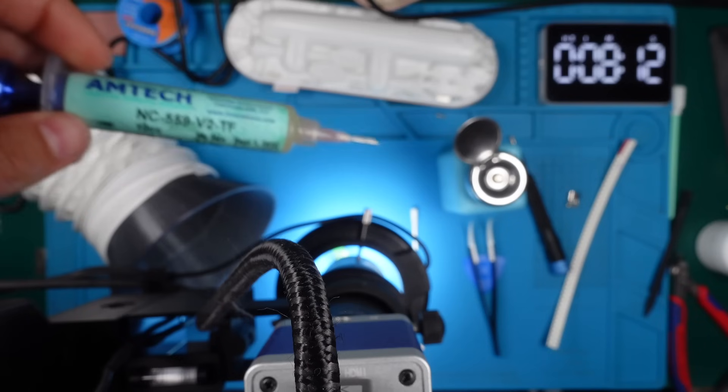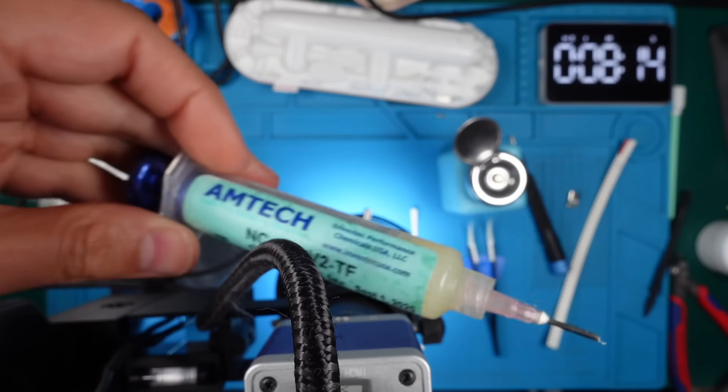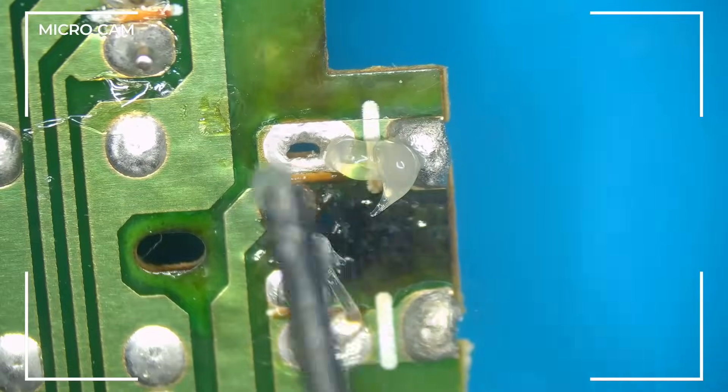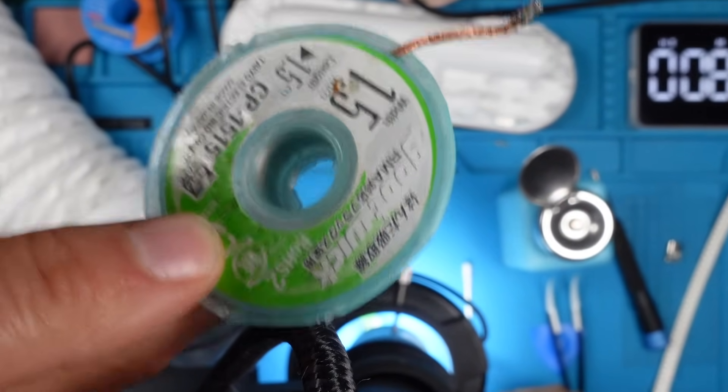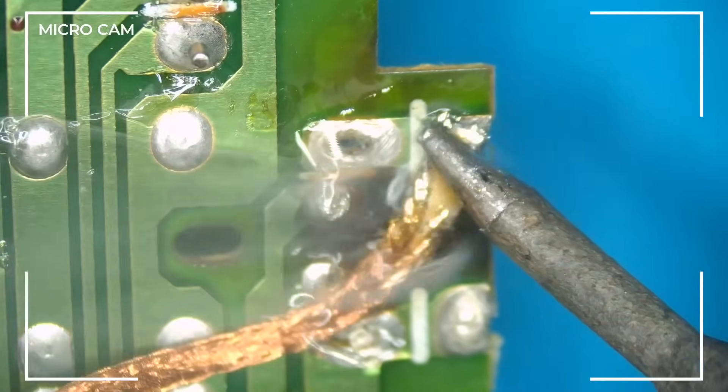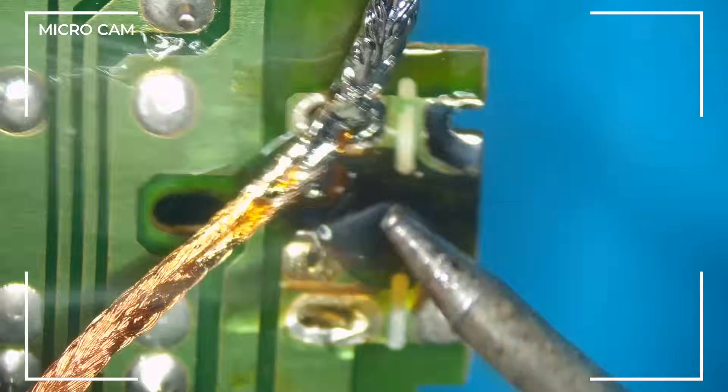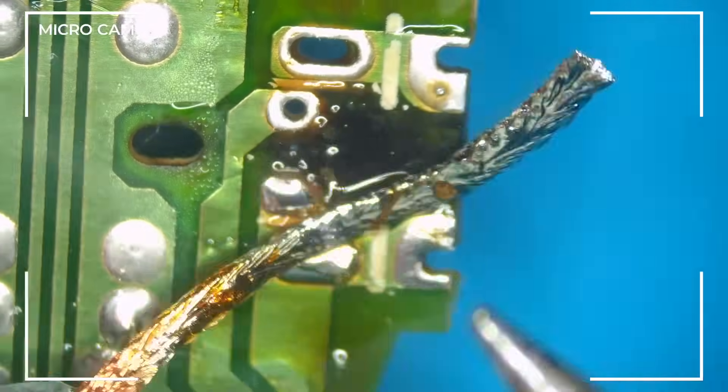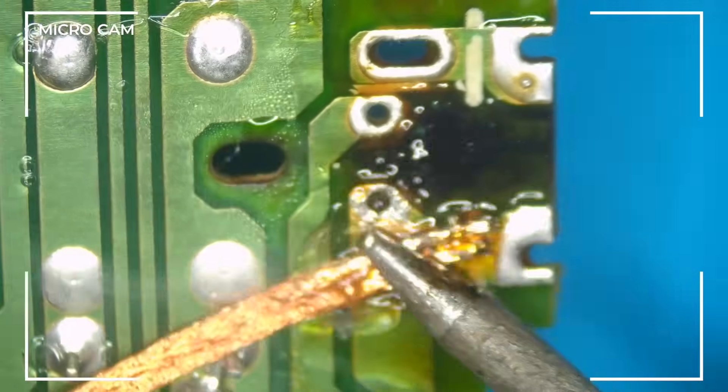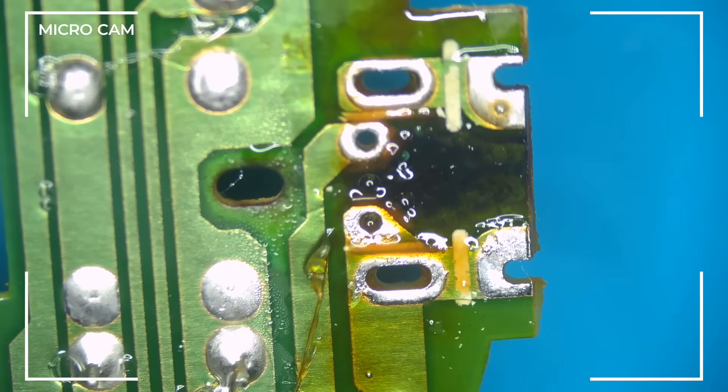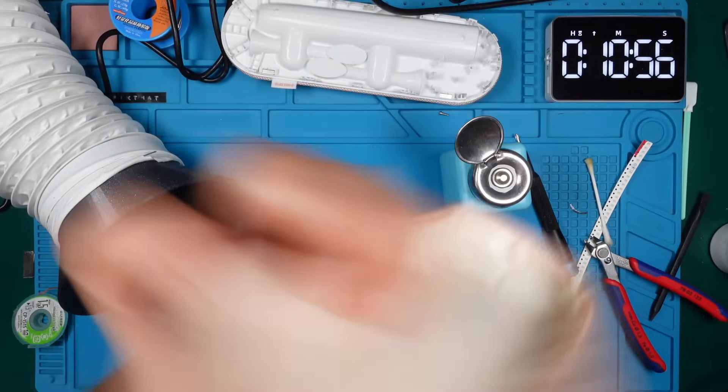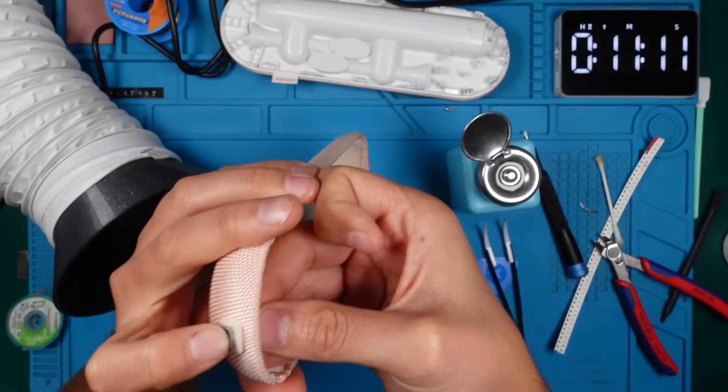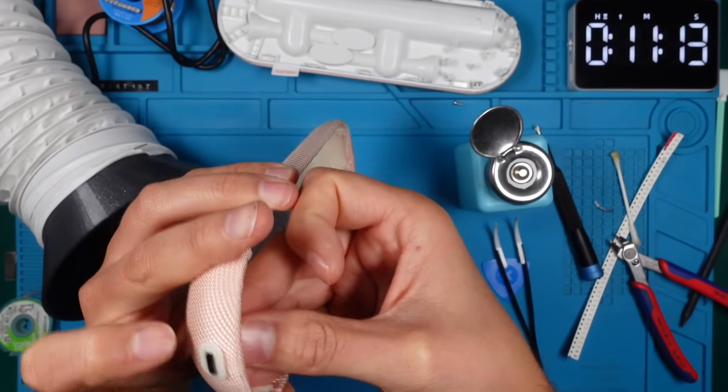Nice! To remove the old solder from the pins, we use fresh flux. The solder wick will absorb all the old solder. It is like a sponge for solder. Let's get rid of the residue with the help of IPA and a cotton swab. We will check if the USB-C breakout board fits in the case. That looks good.